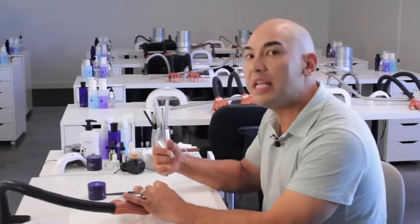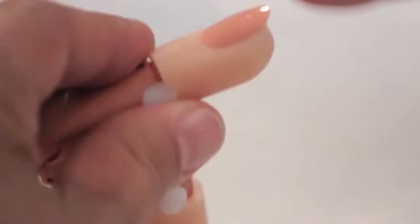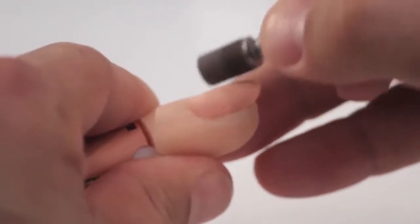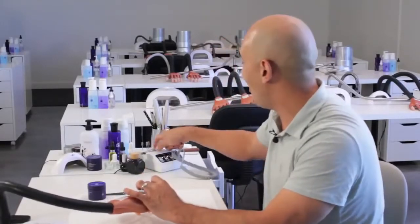We don't need to use pressure. All we need to do is let the electric file do the work for us. By gently touching the surface of the natural nail and allowing the machine to do all the work for us. I usually start from the corner, I work around, tickle tickle, coochie coo.